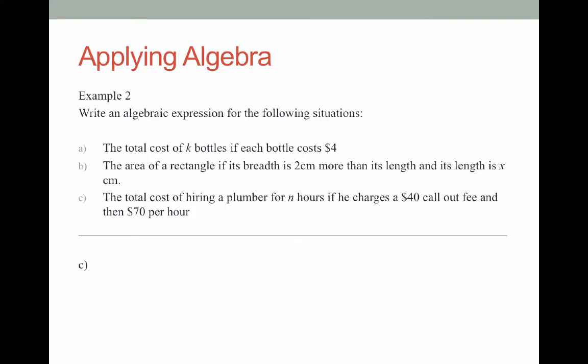Now let's look at C. Again I'd like you to pause the video now and see what you can come up with for an expression that will represent this situation. Okay I hope you paused the video. Here it is. The total cost of hiring a plumber for n hours. So n can be any number. If he charges $40 call out fee and then $70 per hour. Well let's say he doesn't work at all. He just shows up to your house. He still gets that $40 call out fee.